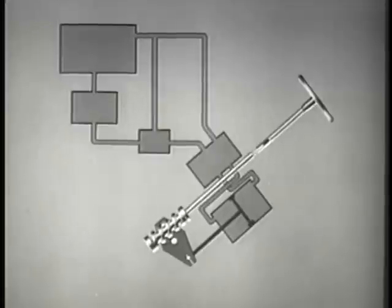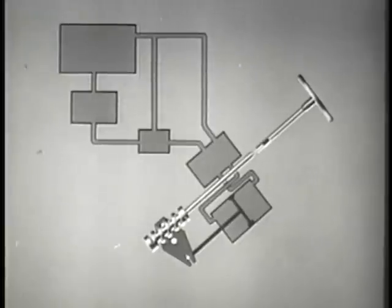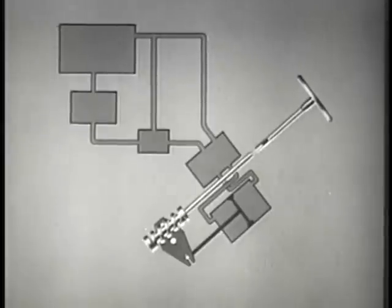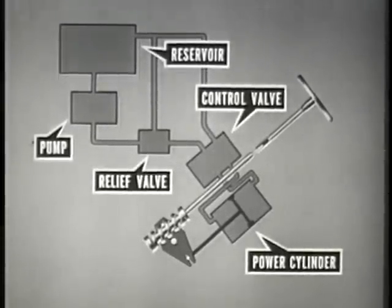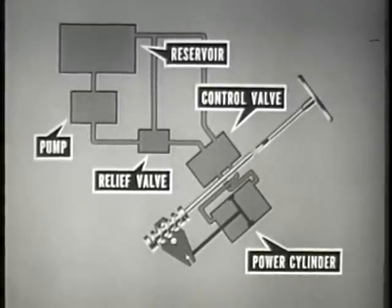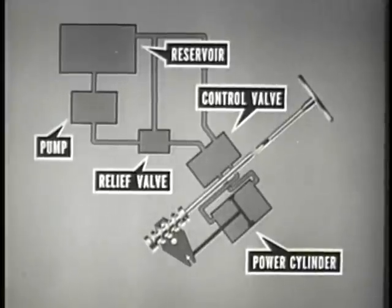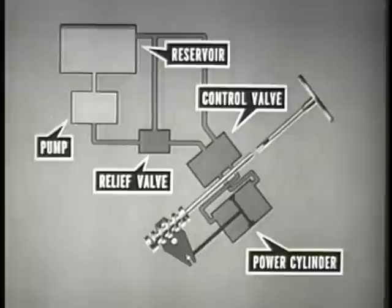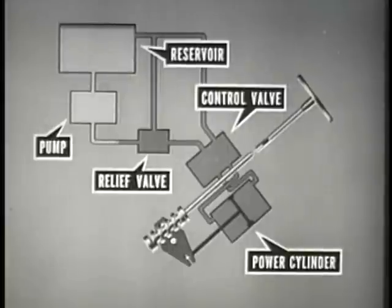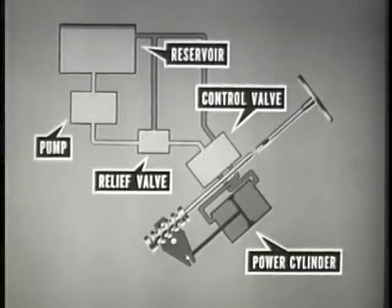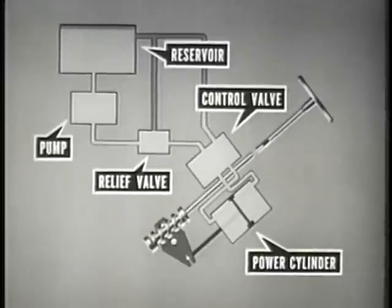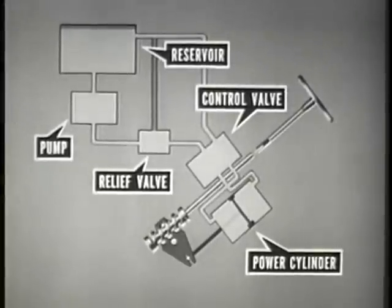To aid in illustrating the internal function of the hydraulic system, a schematic diagram will be used. The steering linkage from the pitman arm lever to the front wheels will not be shown. The reservoir supplies fluid. The pump driven by the engine delivers fluid under pressure to the relief valve and control valve. The control valve, actuated by the steering shaft, directs the fluid to the power cylinder. The power cylinder converts hydraulic pressure into mechanical force by means of a piston.